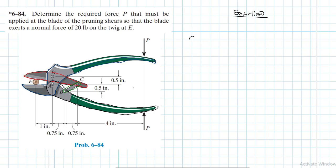Starting with the twig at E: the twig is subjected to a shearing force of 20 pounds. There is also a reaction at an incline on the other side. This is 20 pounds shown on the twig diagram. Now let me draw the outline in red.